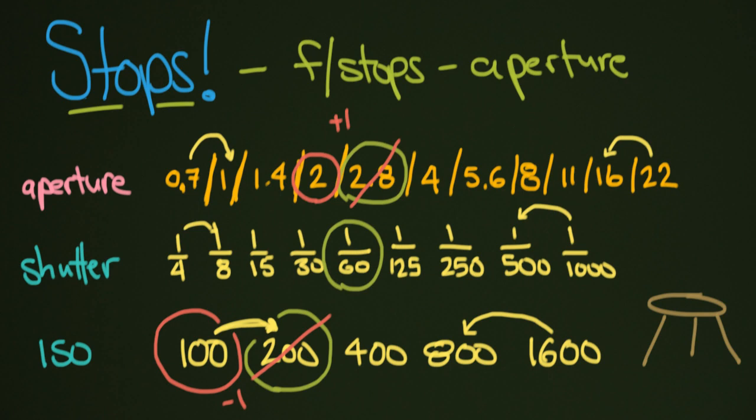This is really just simple math. All it is is just ones and twos and threes. If you memorize each one of these steps, if you just take a look at these numbers and memorize them, and memorize that each one is a stop away from each other, then it's simple math. If you switch from 2.8 to 5.6, then you're going to know that you need to go 1, 2, 1, 2. It's really simple.